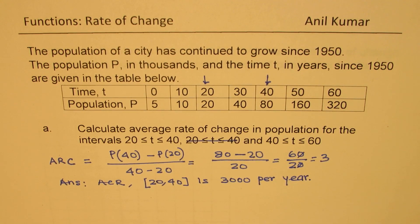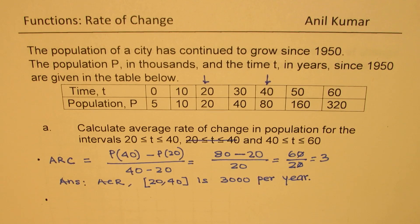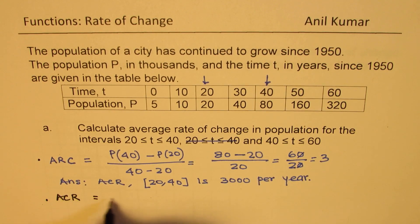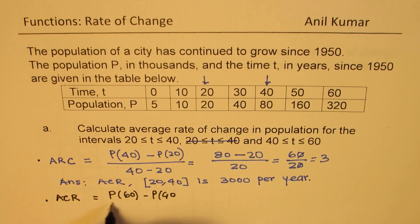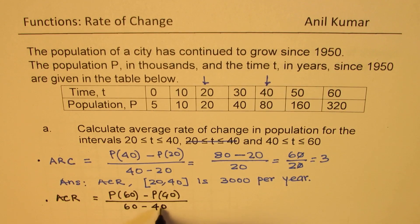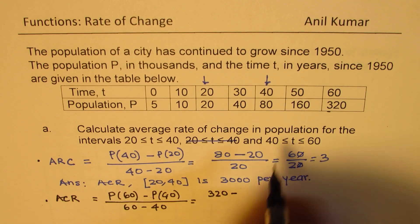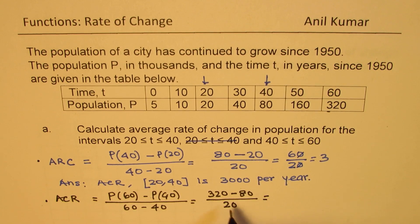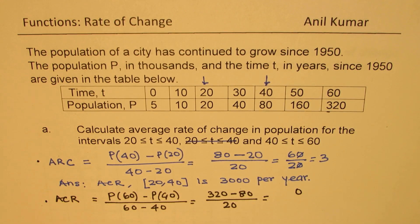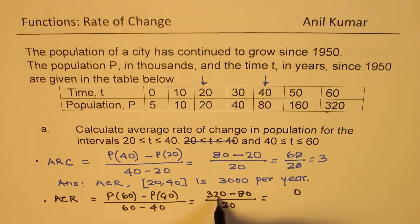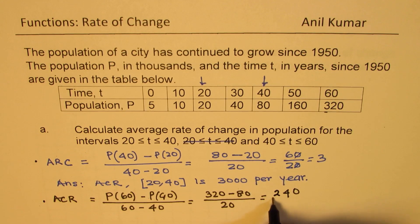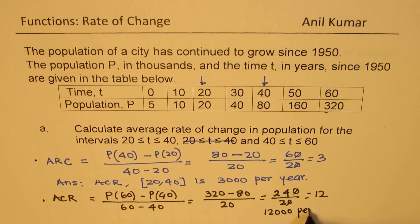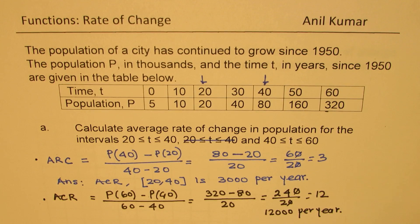Now let's find the average rate of change for the second interval, from 40 to 60. At time 60 the population is 320 and at time 40 it is 80. This is again an interval of 20 years. So we get 320 minus 80 divided by 20, which is 240 divided by 20, giving us 12. The average rate of change for 40 to 60 is 12,000 persons per year.